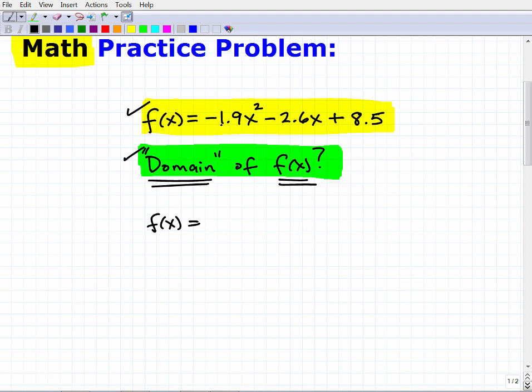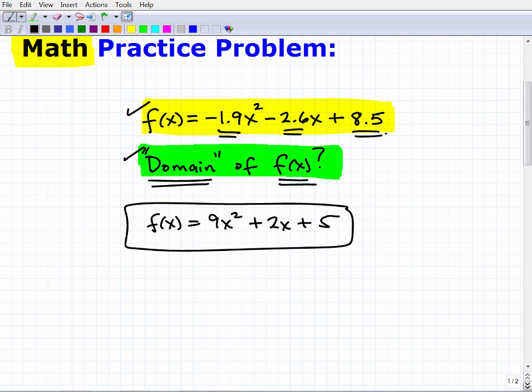Now, it kind of made it scarier than it really needs to be because I snuck in some decimals and negative numbers and whatnot. But really, this is not that bad. I'm going to give you a simpler function. Let's take these negative numbers out. We'll just keep the 9, 9x squared. And here, we'll take out the negative. We'll keep the 2 and make it a plus 2x. And here, we'll just keep plus 5. I could have given you this problem f(x) = 9x² + 2x + 5, but I wasn't feeling so nice. I threw in some negative decimals.